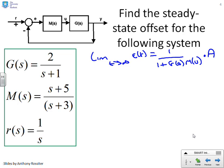So in this case, we've got G of S equals 2 over S plus 1. So G of 0 equals 2. M of S is S plus 5 over S plus 3. So M of 0 equals 5 over 3.